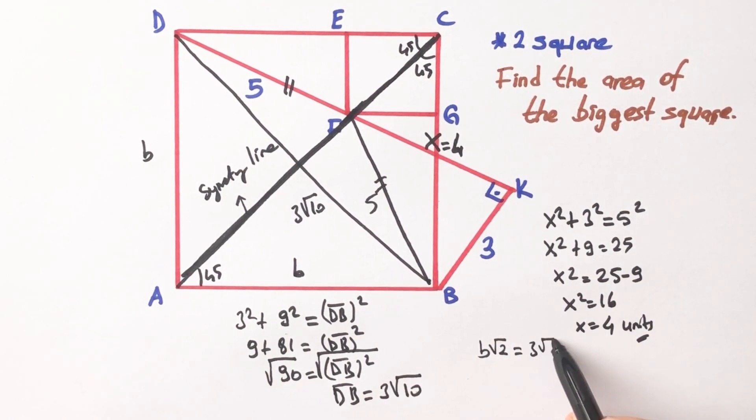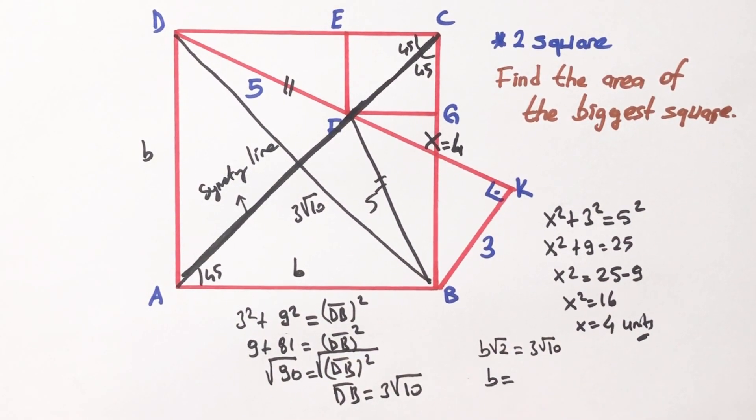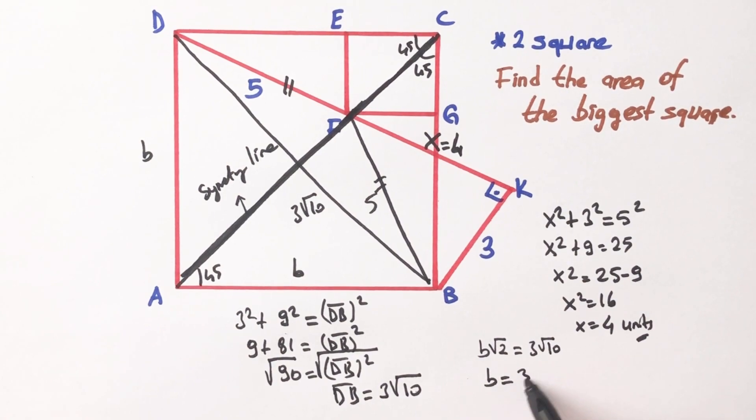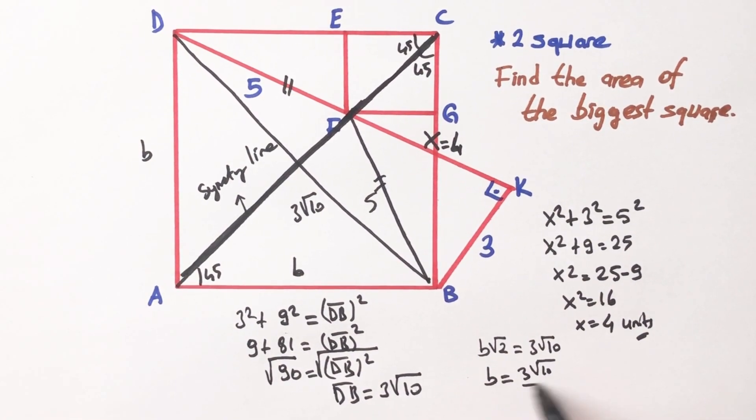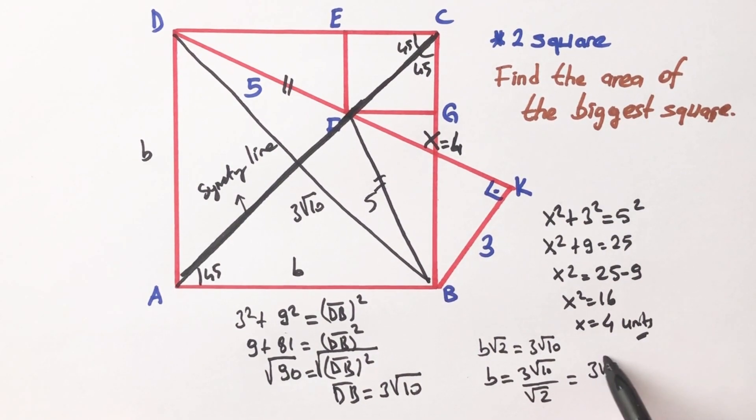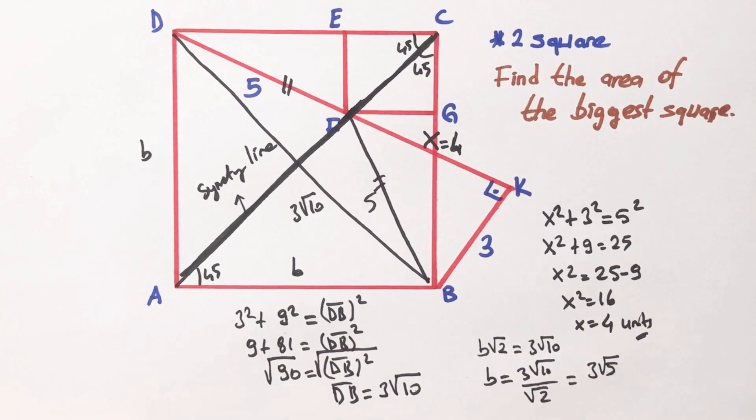B root 2 equals 3 root 10, right? So B equals 3 root 10 over root 2. B is going to be 3 root 5 units.